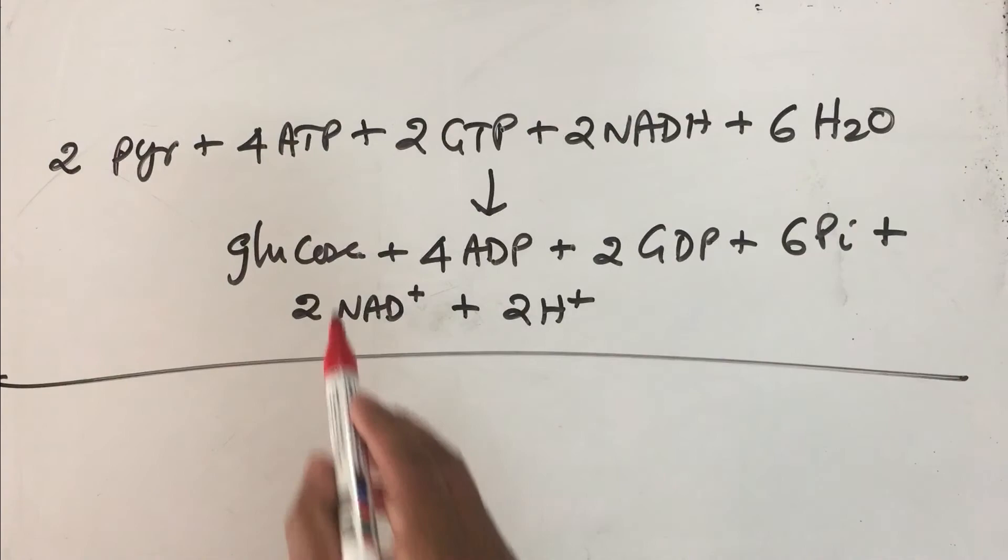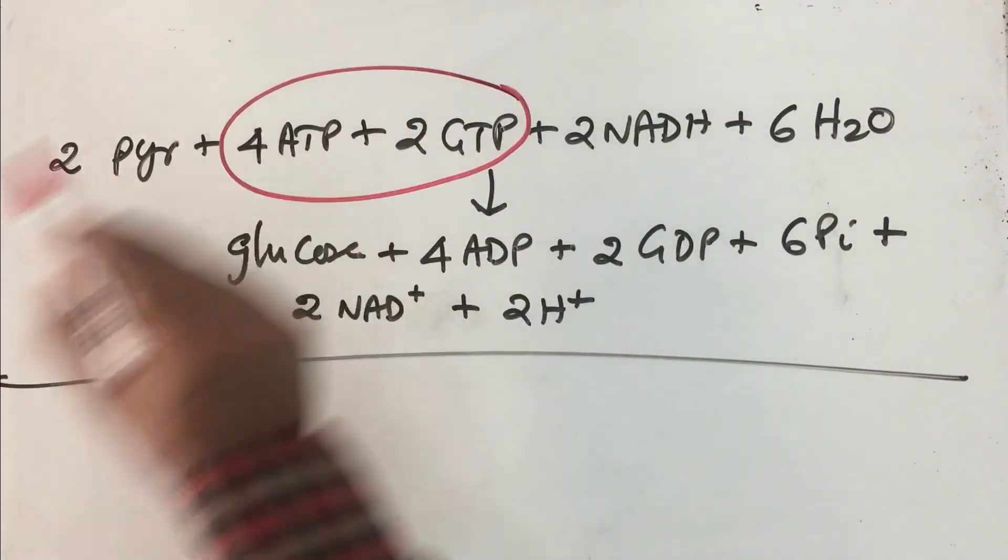What is important for us is to focus on this. In the energy expenditure, you are spending about 6 ATP equivalents for producing 1 mole of glucose. That is the important point that you need to remember in this.